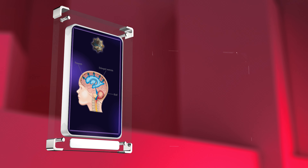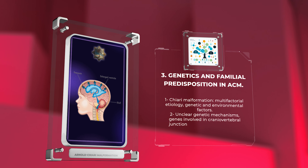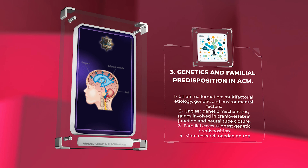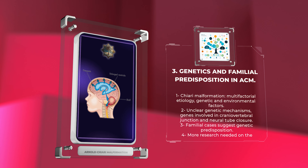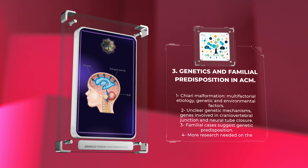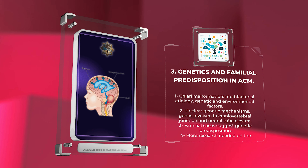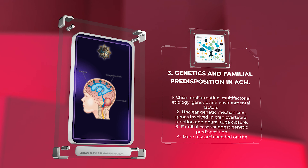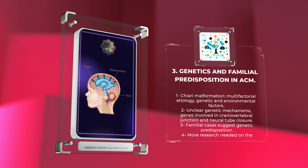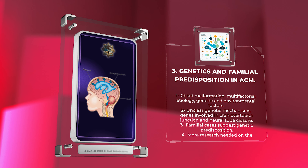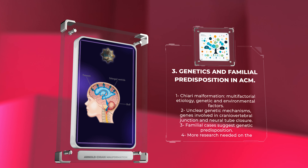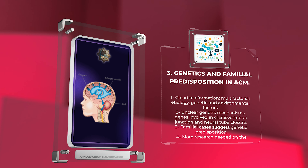Chiari Malformation is believed to have a multifactorial etiology, with both genetic and environmental factors contributing to its development. Although the exact genetic mechanisms remain unclear, studies have identified several genes that may play a role in its pathogenesis, particularly those involved in the development of the craniovertebral junction and neural tube closure. Familial cases have been reported, suggesting a genetic predisposition, but more research is needed to fully understand the genetic basis of Chiari Malformation.